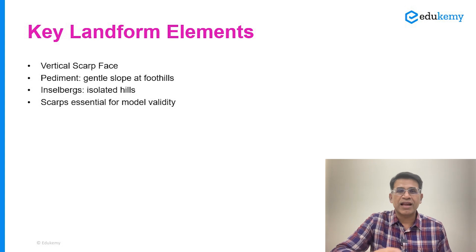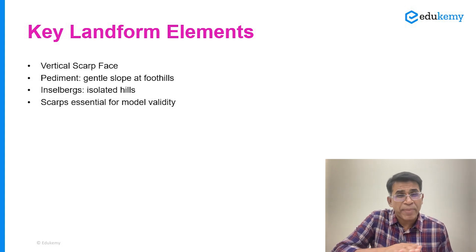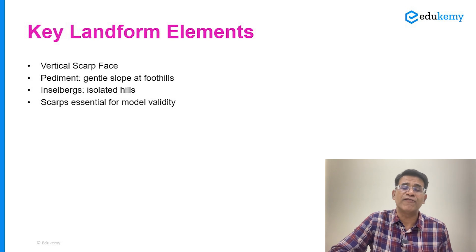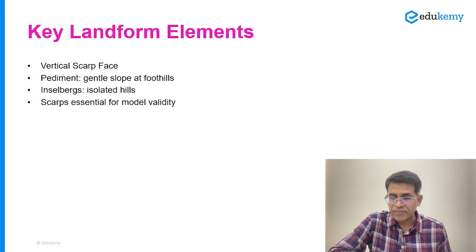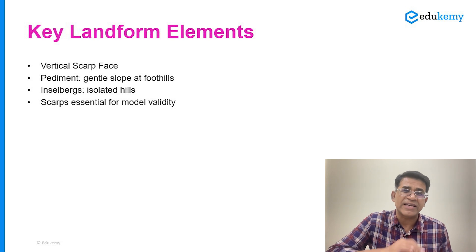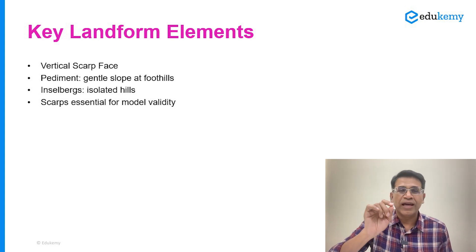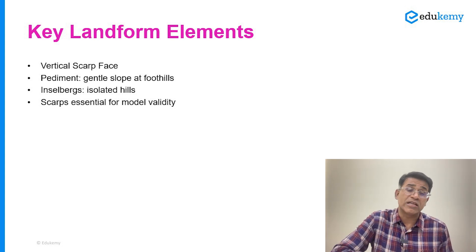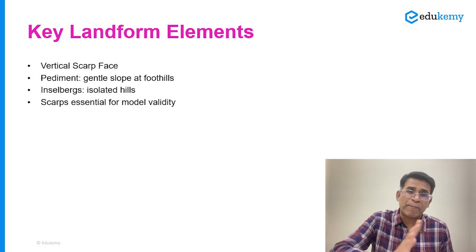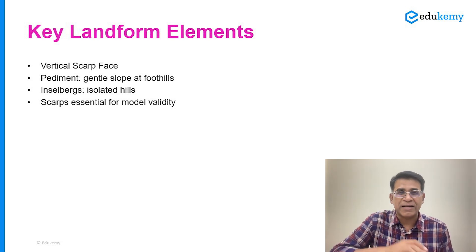In LC King's model, there are three elements of any slope. One is the vertical scarp face. The second is the pediment — a very gentle sloping, almost flat surface near the foothills. The third is that the landscape also has inselbergs. These concepts can be found in Savindra Singh's Geomorphology, page 73. Because there is a vertical scarp face and rivers are performing basal sapping very efficiently, slopes are all withdrawing parallelly backwards — in parallel retreat, slope angles and slope segments are both maintained constant.